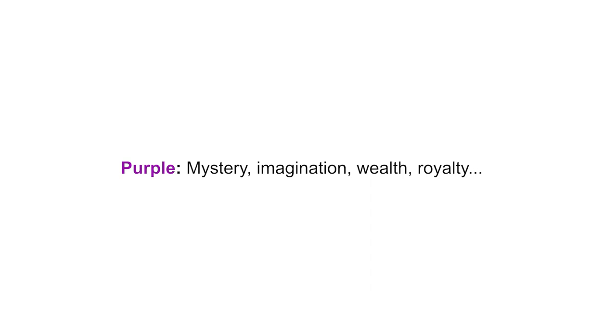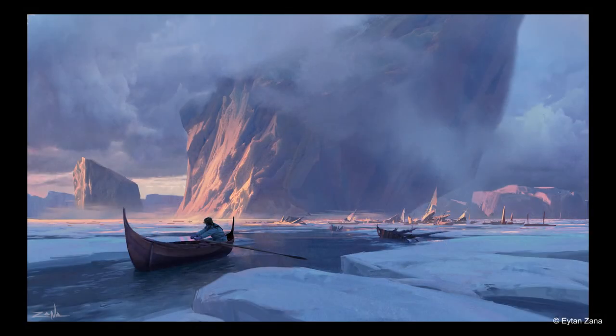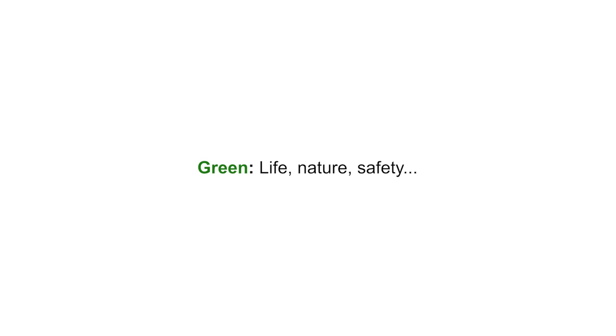Next we have purple, which is associated with mystery and imagination, but also with wealth and royalty. It's extensively used in children's animation films, books, and fairy tales — you can see a great example here where the scene creates a feeling of mystery and we dive into this imaginary world. Then we have green, which is obviously associated with nature and thus with life, but also with safety. Whatever is associated with nature tends to feel friendly and healthy. Think of all organic products — they mostly use green in their branding and packaging. Some insurance companies also use green to convey a feeling of safety.